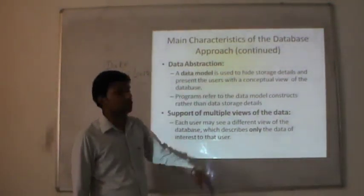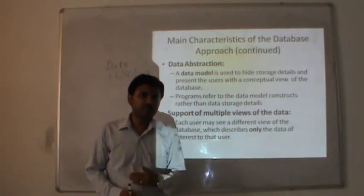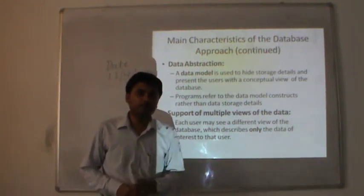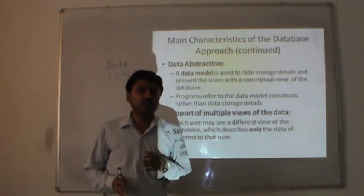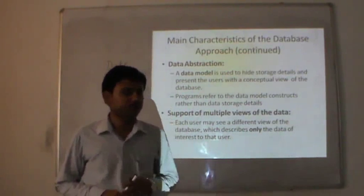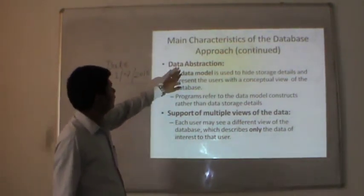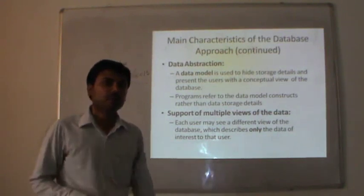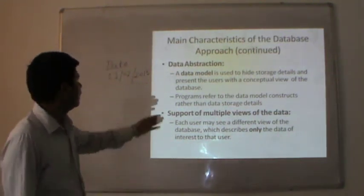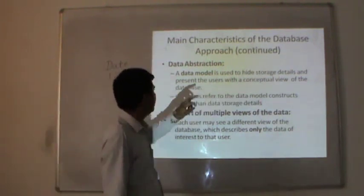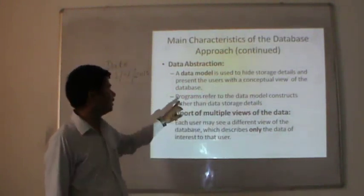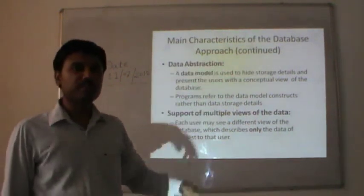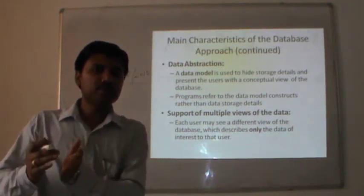What are the main characteristics of the database approach? In coming lectures I will also discuss the disadvantages of file systems which were used before database systems. The first and main characteristic of the database approach is data abstraction. Abstraction means hiding of something. A data model is used to hide storage details and present the user with a conceptual view of the database. Programs refer to data model constructs rather than data storage details; it does not inform how data is stored in the database.